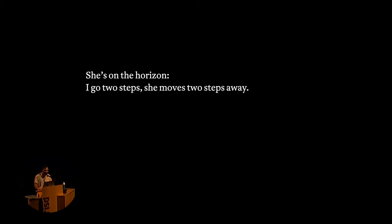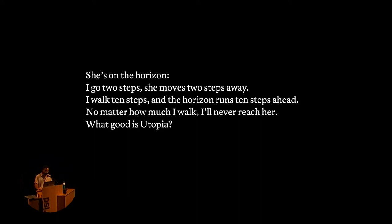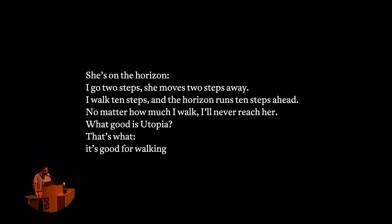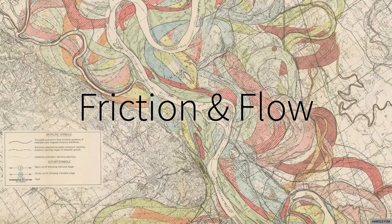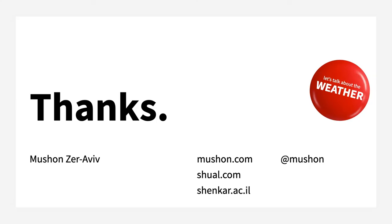She's on the horizon. I go two steps, she moves two steps away. I walk ten steps, and the horizon runs ten steps ahead. No matter how much I walk, I will never reach her. What good is utopia? That's what - it's good for walking. This talk has been a part of my upcoming book, Friction and Flow. I would love for you to challenge me with some constructive friction to constrain and direct my writing flow. Thank you very much.